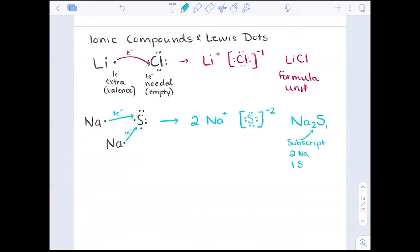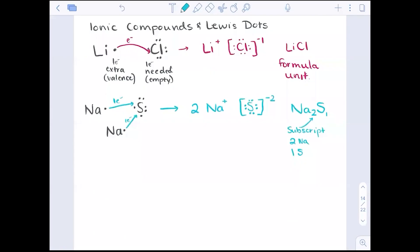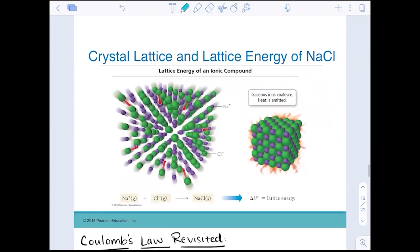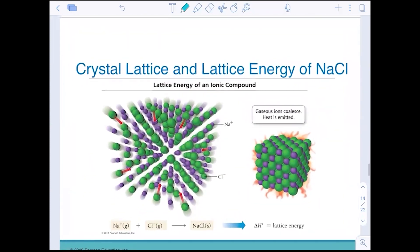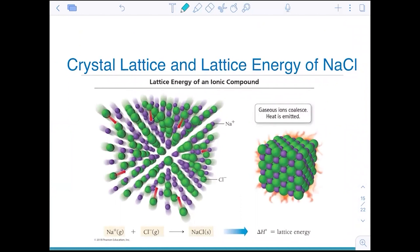Notice that that subscript identifies two sodiums for every one sulfur. We can understand that one right there. Now, speaking of ionic compounds, what we want to be able to look at is a little bit more than what Lewis has to offer. Namely, what we want to be able to focus on is a crystal lattice. That lattice is important for us because what we actually end up seeing is that an ionic bond is not just a transfer of energy.